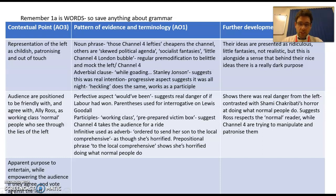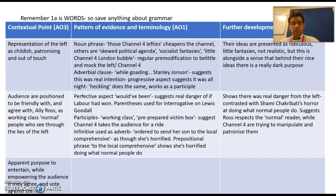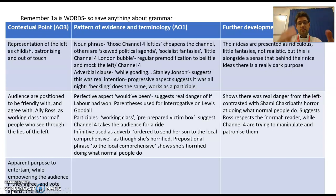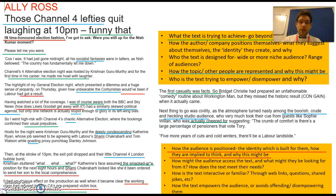As with the last video, I've picked out evidence for two of the contextual points and I'll show you how you would actually write one of them. For the first point I'm going to show you the evidence, the planning, and then what it might look like in a paragraph. For the second one, there's the evidence and planning but I'm not going to show you the paragraph. For the third one there's a contextual point - if you want, you can go back, look at what I've colour-coded and think about what your paragraph might be.